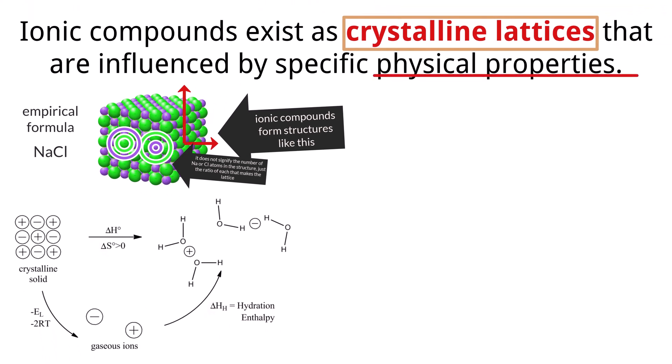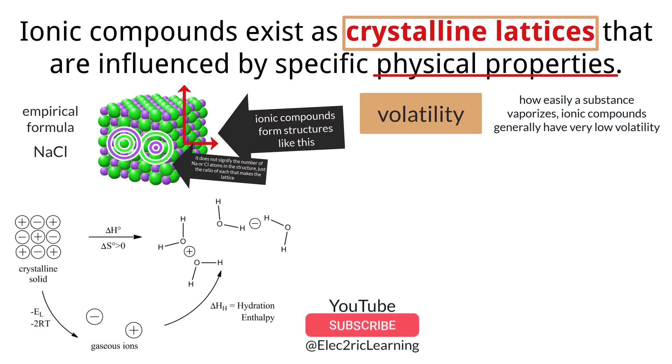Now let's consider the physical properties of ionic compounds, starting with volatility. Volatility refers to how easily a substance vaporizes. Ionic compounds generally have very low volatility. This is because the strong electrostatic forces holding the ions together in a lattice require a significant amount of energy to overcome. Therefore, ionic compounds typically have high melting and boiling points, meaning they remain in solid or liquid states over a wide range of temperatures. You won't see salt or ionic compounds easily turning into gas at room temperature.